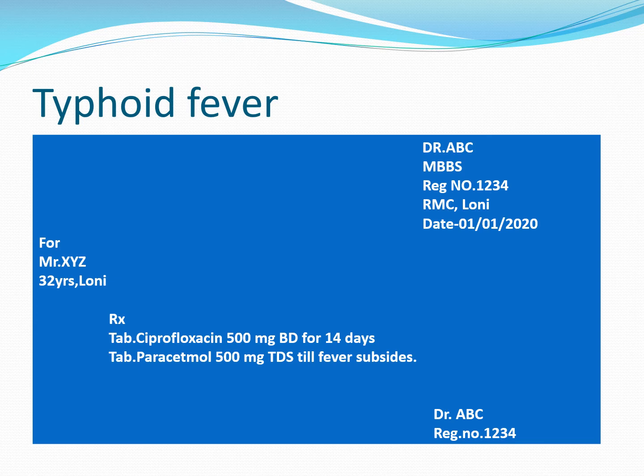For the prescription for typhoid fever, we give tablet ciprofloxacin 500 mg twice daily for 14 days, along with tablet paracetamol 500 mg 3 times daily till fever subsides. Alternative drugs include ciprofloxacin 200 mg IV twice daily or ceftriaxone. The drug of choice for typhoid fever is ciprofloxacin — a fluoroquinolone group antibiotic — and alternative drugs are ciproxacin and ceftriaxone, both cephalosporins.